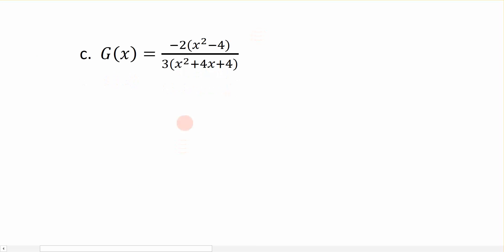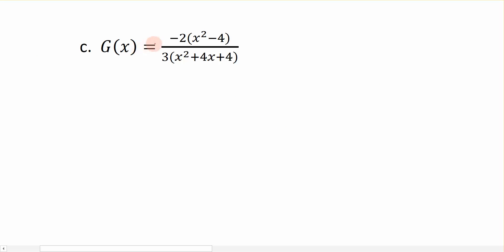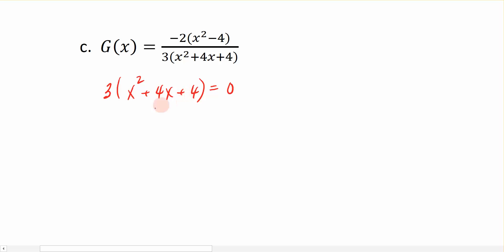The last example is g(x) = −2 times the numerator expression, divided by 3 times a trinomial in the denominator. Again, we're only concerned with where the denominator equals 0, so I take the denominator, set it equal to 0 and solve. I can divide off the 3, and what I'm left with is the trinomial x² + 4x + 4, which I now need to factor.